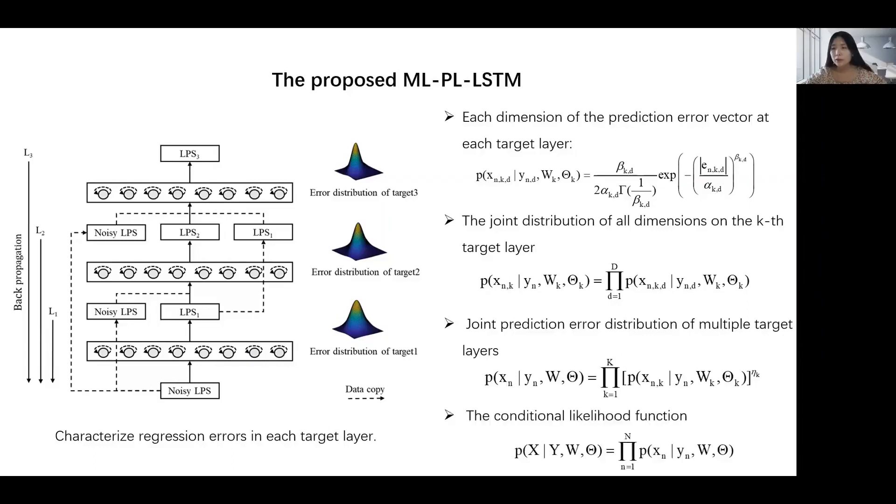Finally, given a set with n data pairs and assuming that they are drawn independently, the conditional likelihood function of the whole network can be expressed as follows.